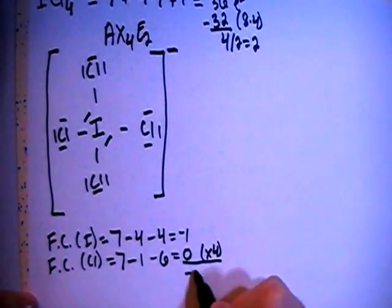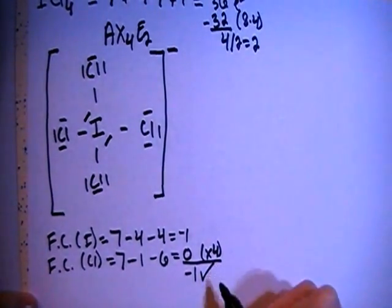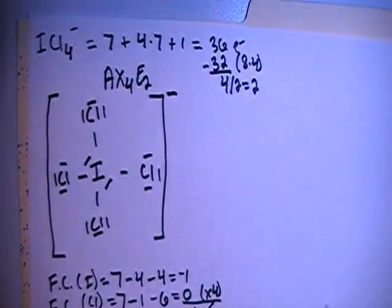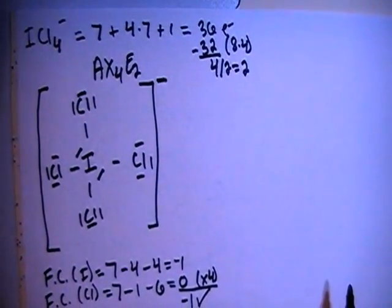Add all these formal charges up, that gets us a negative 1 overall formal charge, which is what we need because this is a minus 1 charged ion. So that's good there.